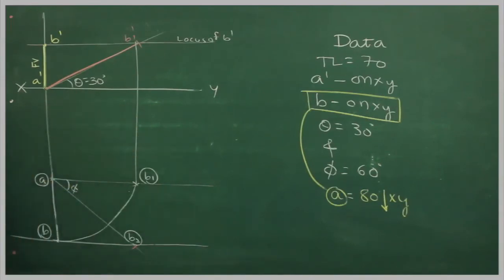Now, we know according to our original data, b is on xy line. So we can mark point b over here. Take b to a in your compass, and from here you cut on this line. So get a.